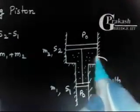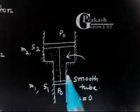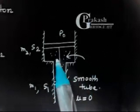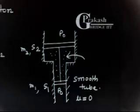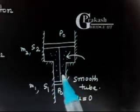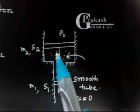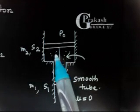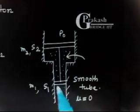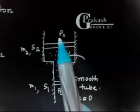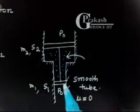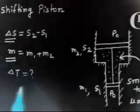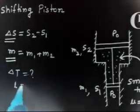So the question says: if I give some heat, the temperature will increase. And once the temperature increases, this piston will shift up. Why? Because if the temperature inside increases, pressure will increase. Once pressure increases, it will apply a force upward. This pressure will also apply a force downward, but the upward force is greater because the area is more on the top. So the piston will move up. We have to find delta T such that the piston will move by a distance L.